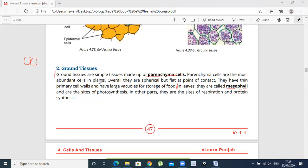So parenchyma cells are most abundant. Overall they are spherical, but at the point of contact they become flat. They have thin primary walls.